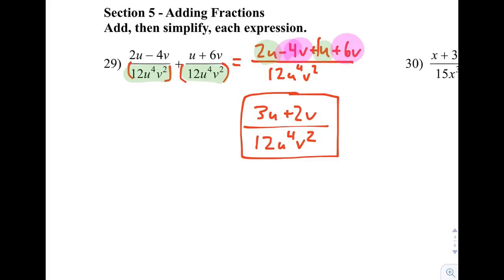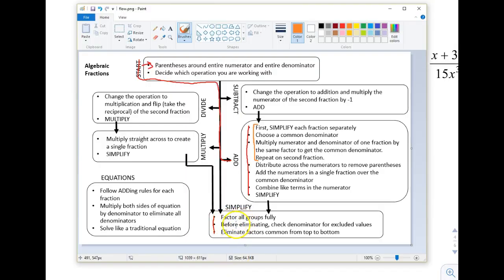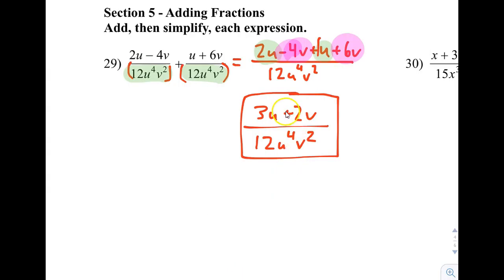When we look at the top of this fraction here, we will see that the entire top has nothing in common with other things. It's got a 3 and a 2, nothing in common. U and a v, nothing in common with each other. On the flow chart, when it says to factor all groups fully, there is nothing that can be factored out of that top, meaning that no matter what we do, nothing is going to simplify since the bottom will never look exactly like that. So we are done.